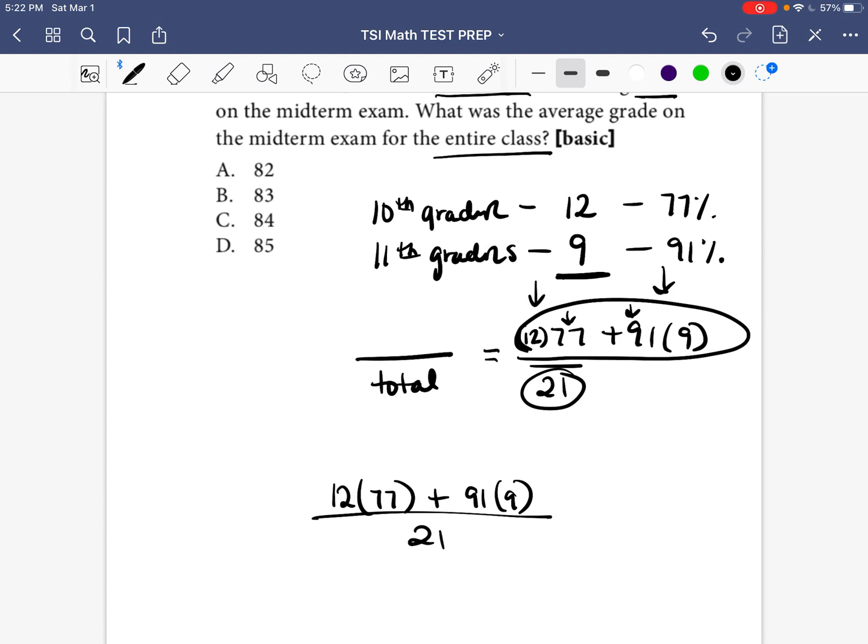So go ahead and grab your calculator because on your test you will be able to use this and do 77 times 12, and that equals 924. Then do 91 times 9, that is equal to 819 over 21.